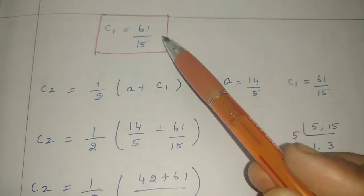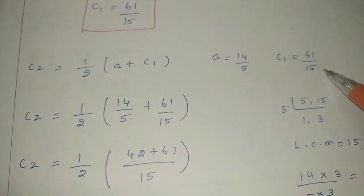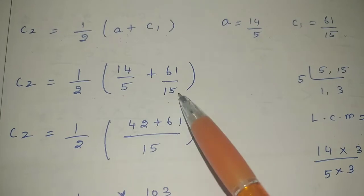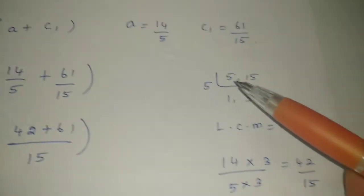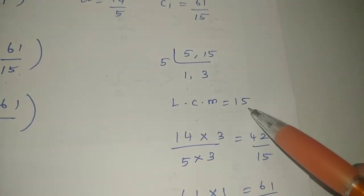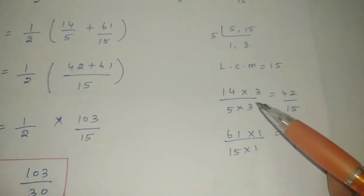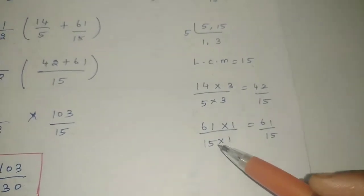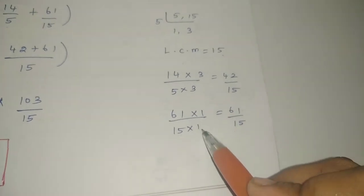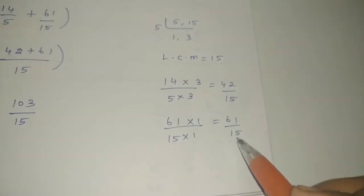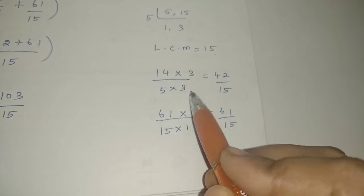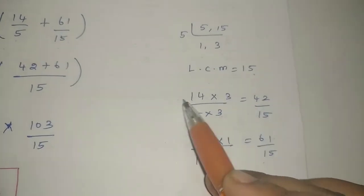A is equal to 14 by 5, and C1 is 61 by 15. So half into 14 by 5 plus 61 by 15. The LCM of 5 and 15 is 15. So 15 over 5 is 3; 14 times 3 is 42. So we get 42 by 15 plus 61 by 15.